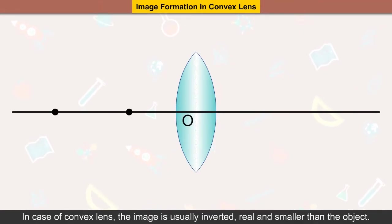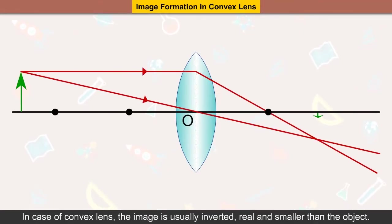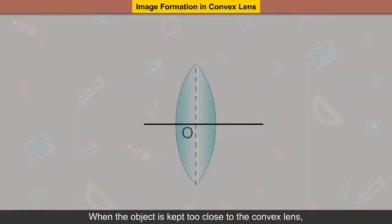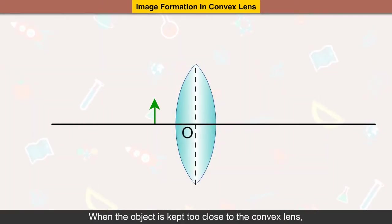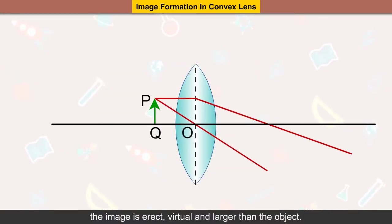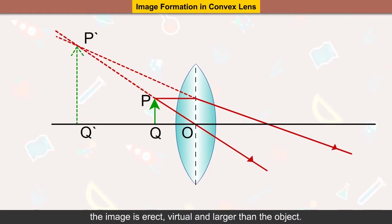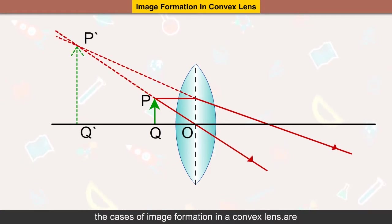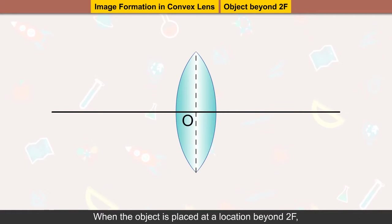Image formation in a convex lens: in the case of a convex lens, the image is usually inverted, real, and smaller than the object. When the object is kept too close to the convex lens, the image is erect, virtual, and larger than the object.